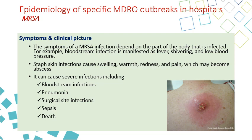For the signs and symptoms of MRSA, there are no specific signs and symptoms — it depends on where the infection happened. If infection happened in the blood, you will get bloodstream infection; if in the lung, you get pneumonia. The most common infections caused by MRSA include bloodstream infection, pneumonia, surgical site infection, sepsis, and death. For skin infection, you will have swelling, warmth, redness, and pain at the site. If the patient has bloodstream infection, you will have fever, shivering, and hypotension.